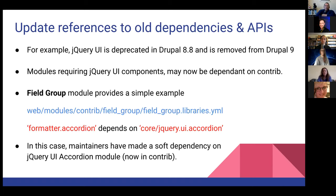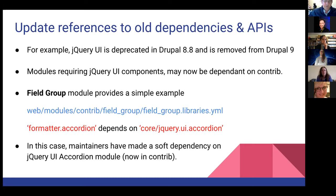In addition to the core_version_requirement, there are other things module maintainers may need to do. It's estimated that a good third of all Drupal 8 modules only need the core_version_requirement change making to the info.yaml file — that's enough on its own to make them compatible with Drupal 9. For the other modules, it's also a question of updating references to deprecated dependencies and deprecated older APIs.